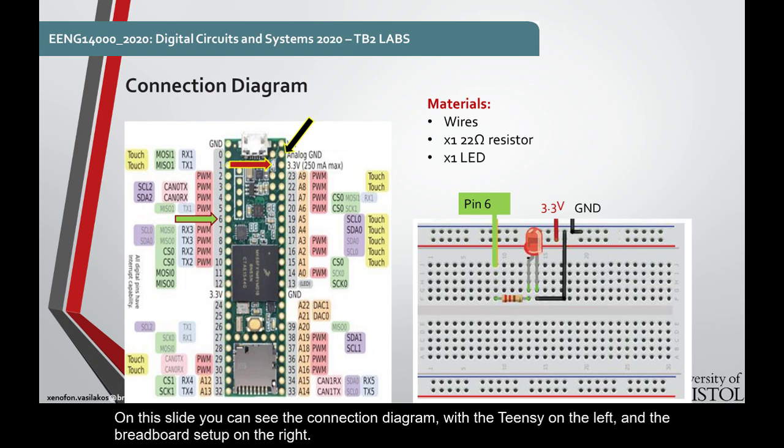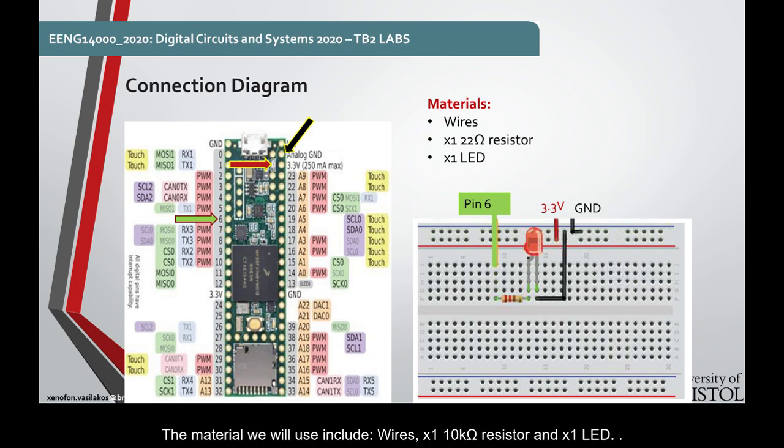On this slide, you can see the connection diagram, with the Teensy on the left and the breadboard set up on the right. The material will include wires, one small resistor with a nominal value of 22 ohms, and one LED. Notice that we will use pin 6.